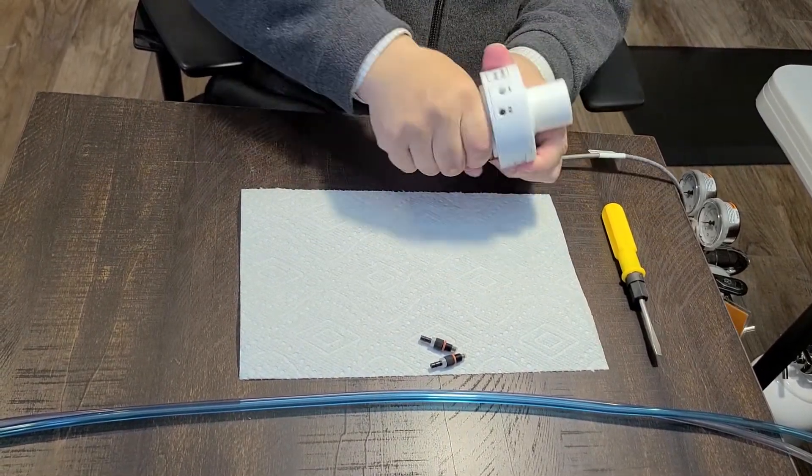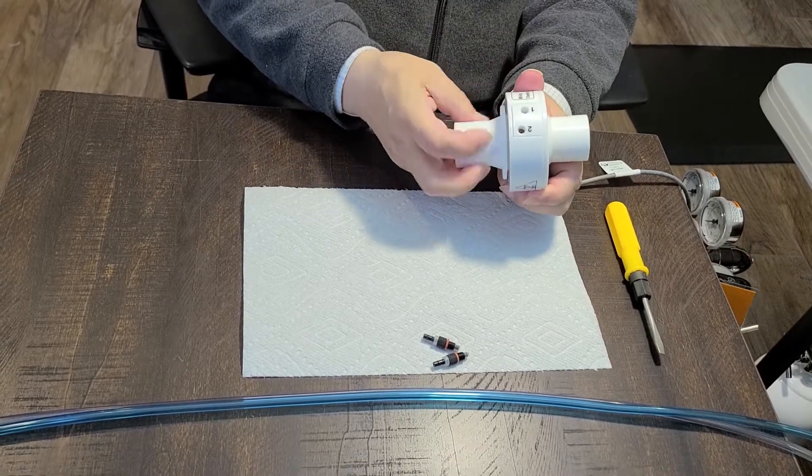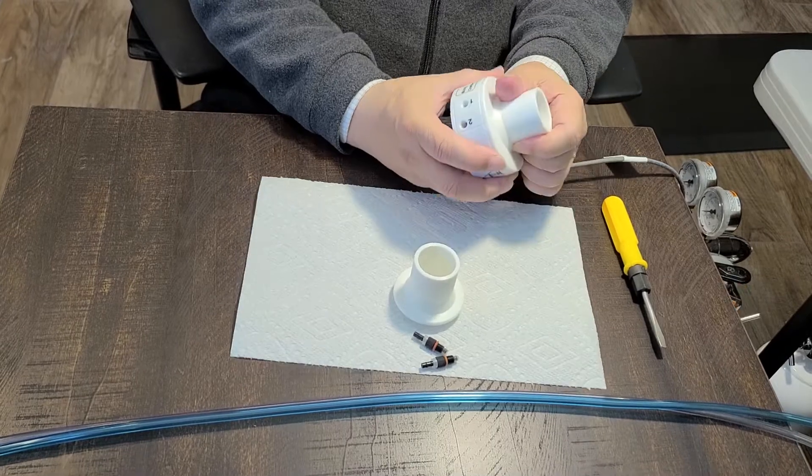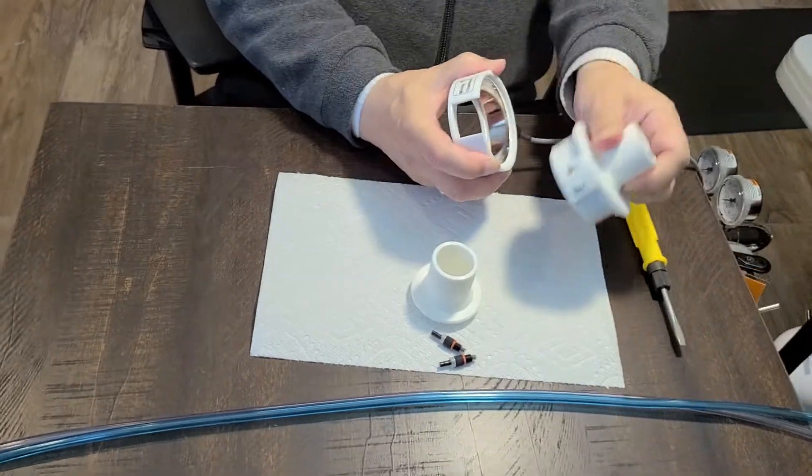Then we unscrew the small French port tube. Pull apart the heater shell.